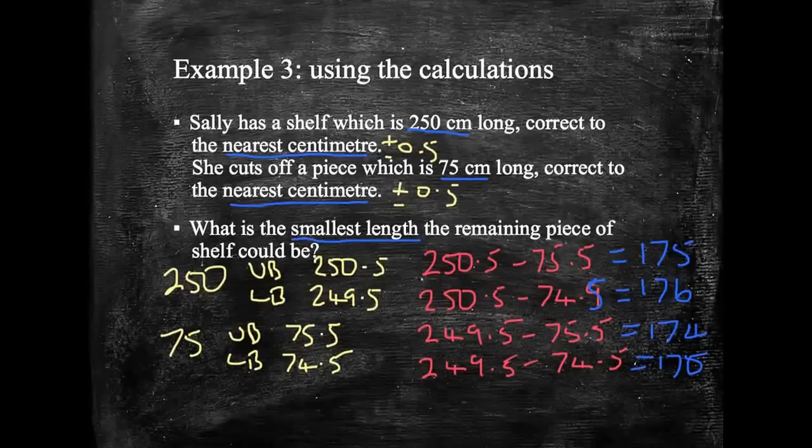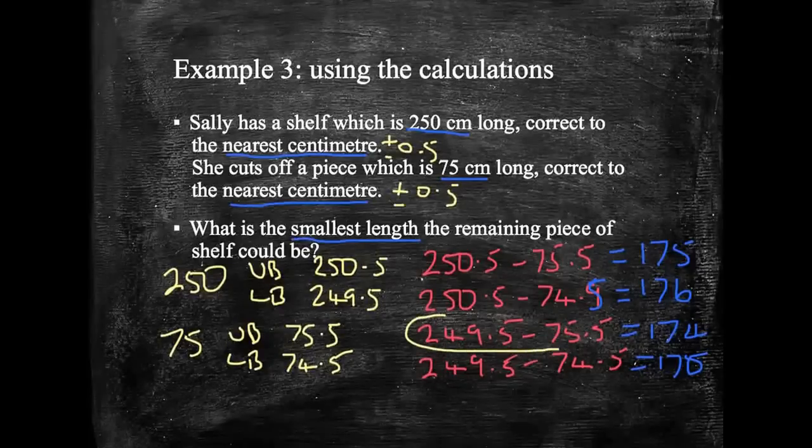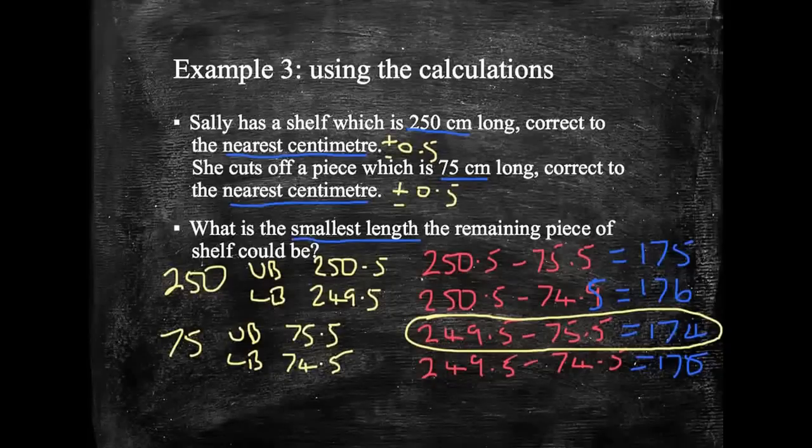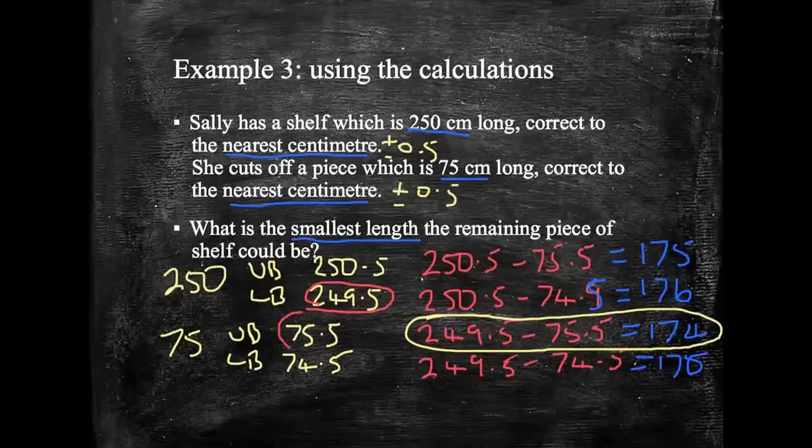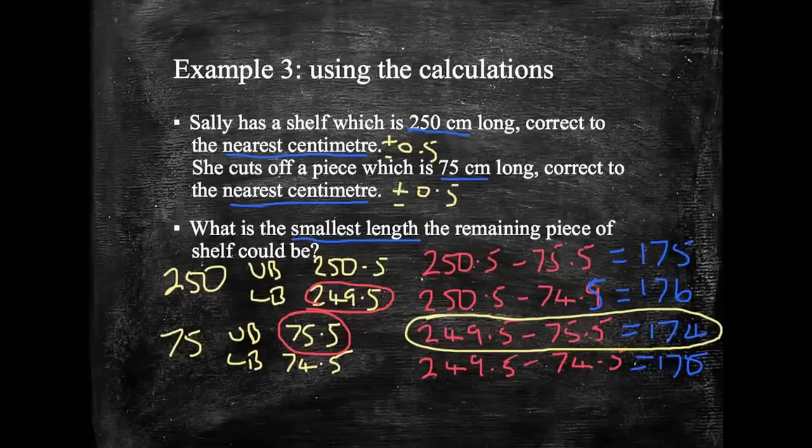Now we can see here that the lowest one is this one. It turns out it's the smallest of the length here, take away the largest of the bit that's been cut off. So it's the smallest, take the largest. If this isn't obvious to you, don't stress about it in the exam. Just do every single calculation and check as you go through.